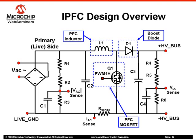The input rectified voltage VAC and the output DC voltage VDC are measured using resistor dividers, while the input current is measured using a shunt resistor. The role of the inductance in this power factor correction topology is essential. The physical size of the inductor increases with the power rating, and component size is one of the main reasons for implementing an Interleaved PFC design.